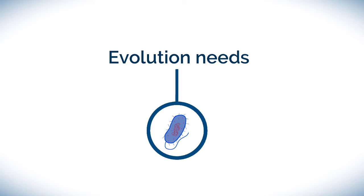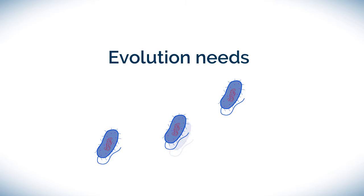In order to work, evolution needs already existing organisms which can reliably make copies of themselves. Evolution by natural selection cannot even start to occur until you have these reproducing organisms.